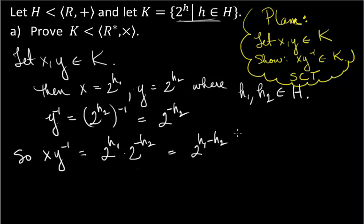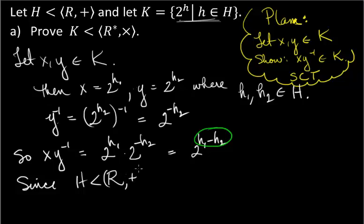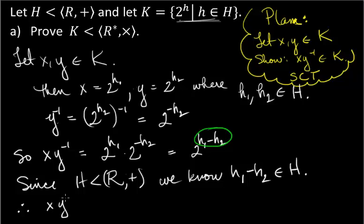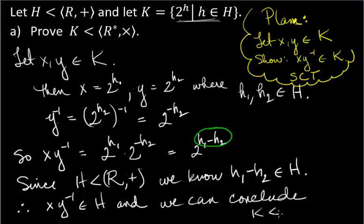Now in order for that to live in K, all we need is to know that the exponent on 2 comes from H, and it does because H is an additive subgroup. Since H is a subgroup of the real numbers under addition, we know H1 plus the additive inverse of H2, which is minus H2, is in H. Therefore XY inverse is in K, and we can conclude K is a subgroup of R* by the subgroup criterion test. And that's what you're going to do every time — look at that plan up there in yellow.